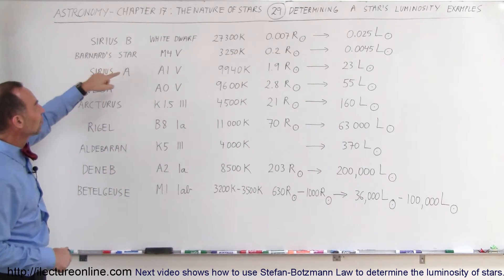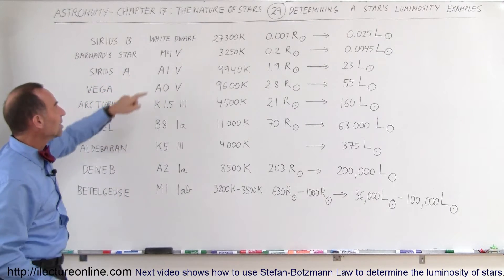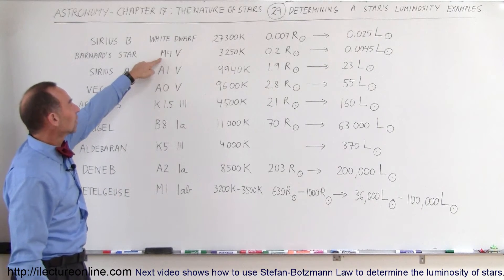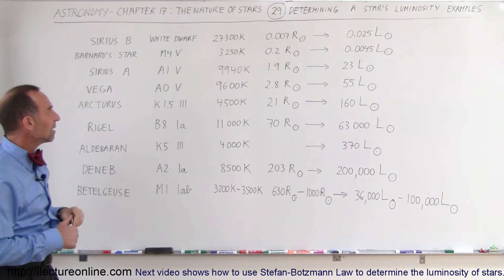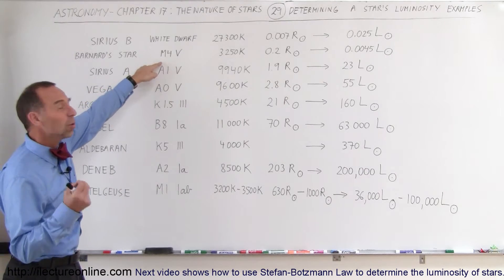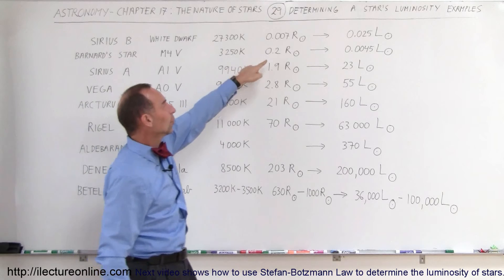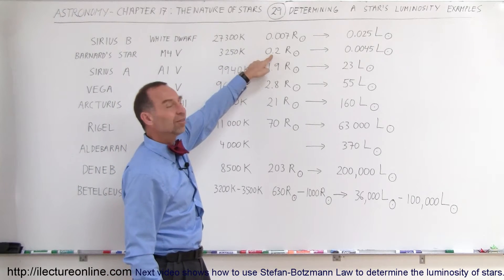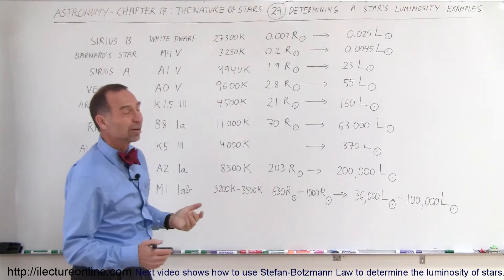Here we have Barnard's star, it's about 6 light years away from us. It's an M4-5 star, that means it's a spectral class M type 4 and luminosity class 5 which means it's a main sequence star, but this looks like it's a small red star, surface temperature 3,250 Kelvin. The radius is about 2 tenths the radius of the Sun and therefore luminosity is less than 1%, about 0.5% the luminosity of the Sun.